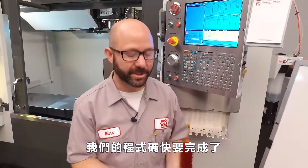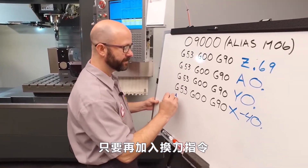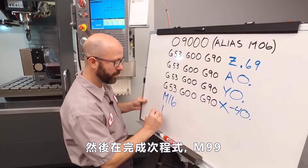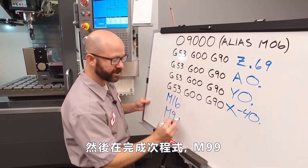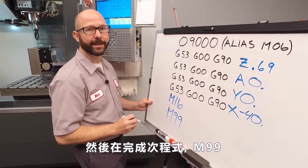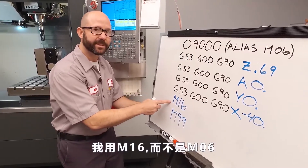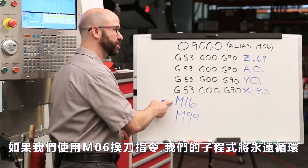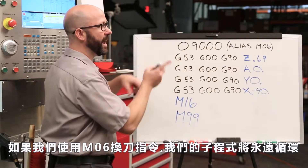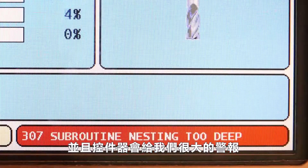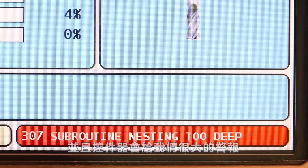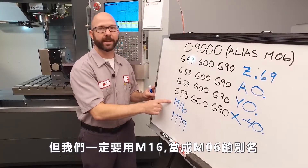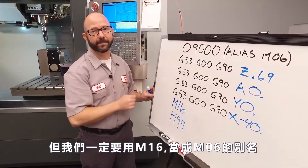Our program is almost finished. We just need to add a tool change command and finish our subprogram — like all subprograms — with an M99. Now we use an M16, not an M06. Had we used an M6 tool change command, our subprogram would have looped forever and given us a nesting too deep alarm at the control. M16 and M6 do the exact same thing, but we must use an M16 when aliasing an M6 command.